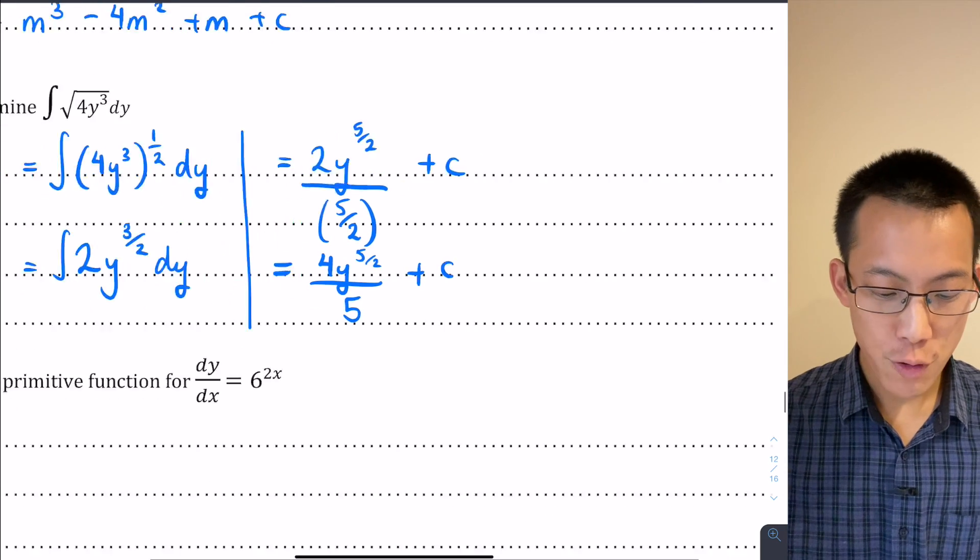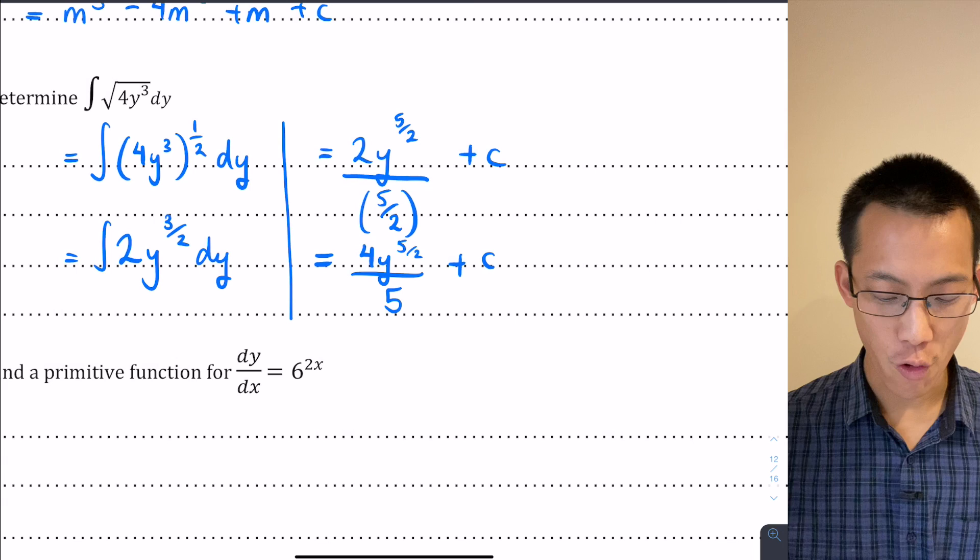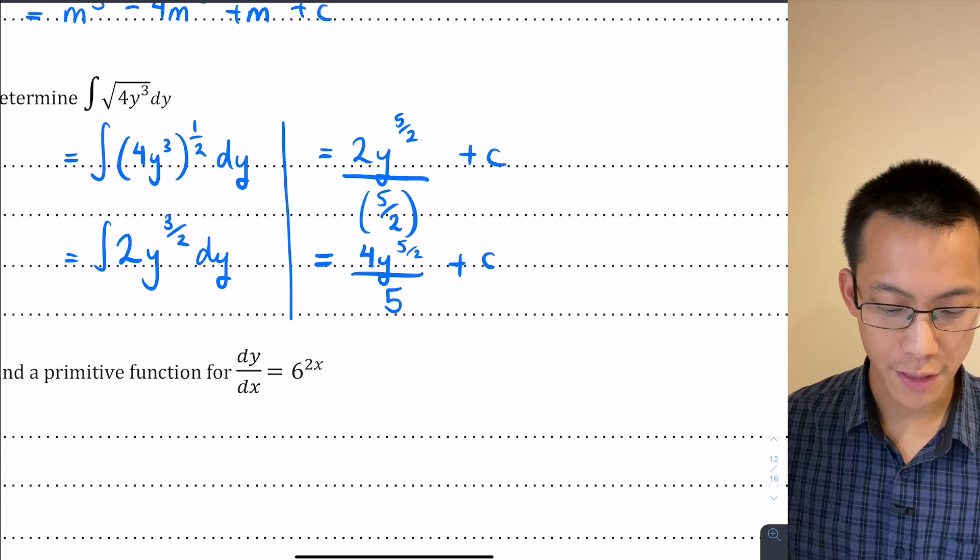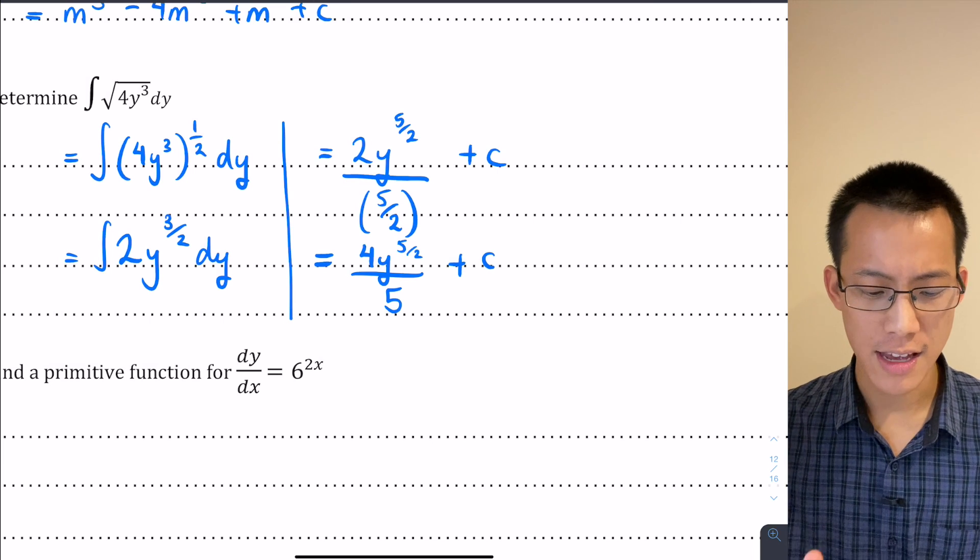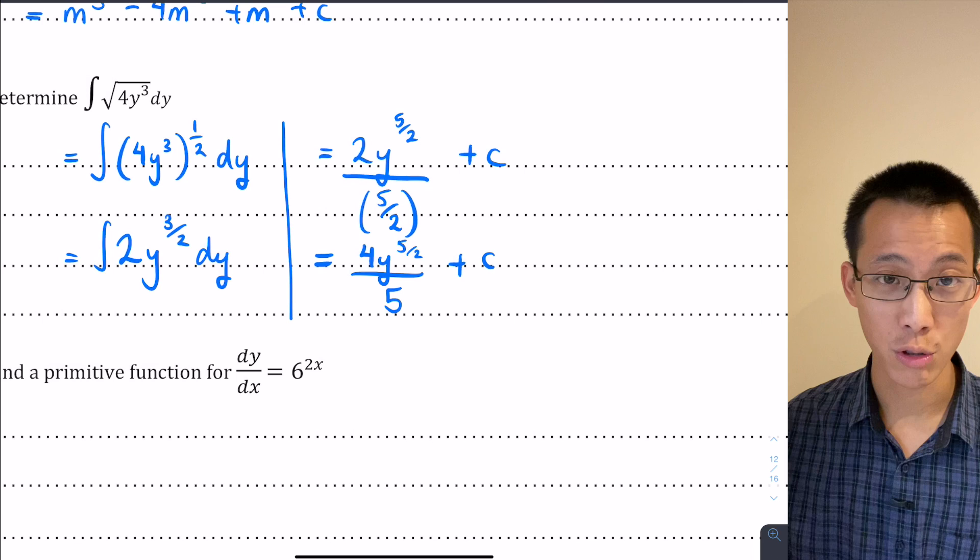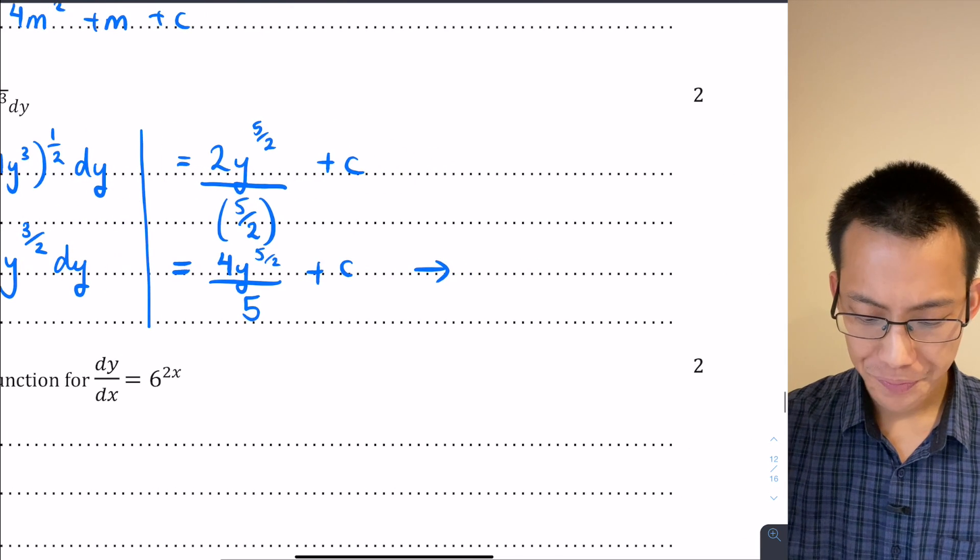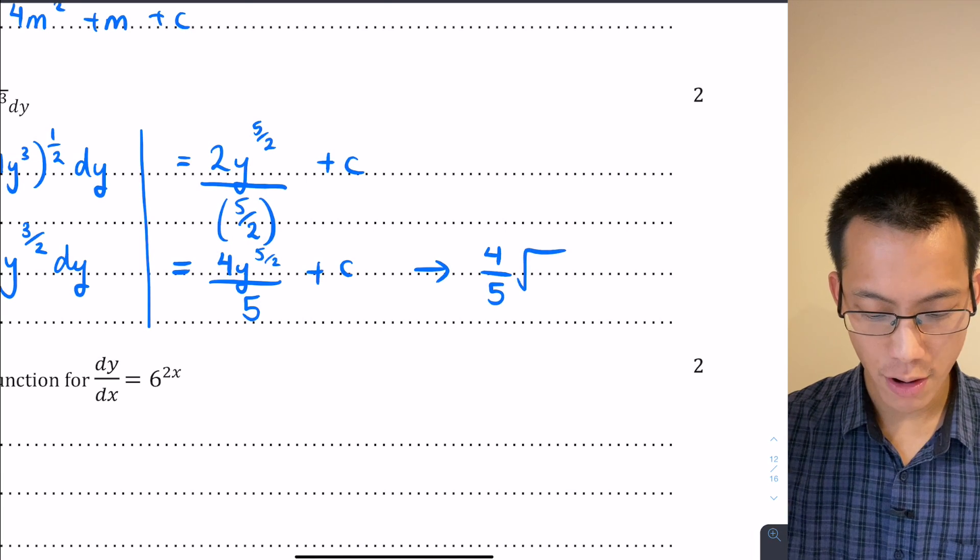So there's the answer if you want it, and often it is helpful you can write this answer in the form that the question was provided to you. So there was none of this fractional indices in the question that was posed to us, so if I wanted to restore this to looking like a square root, I would say that this could be written as 4/5 and it's the square root of y to the power of 5 plus c.